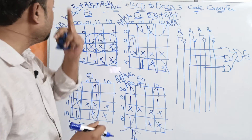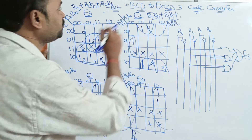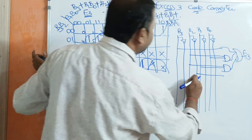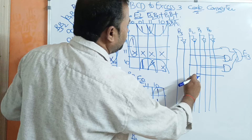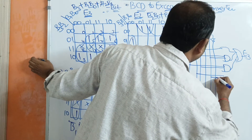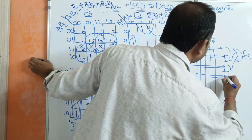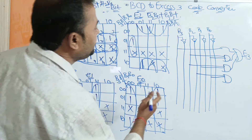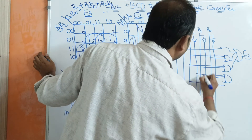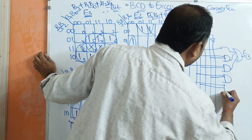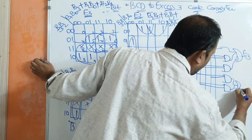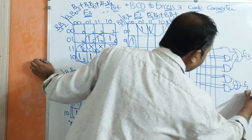For E2, the expression is B2'·B0 + B2'·B1. We AND B2 bar with B0, then AND B2 with B1. We then OR those two results together to get E2.